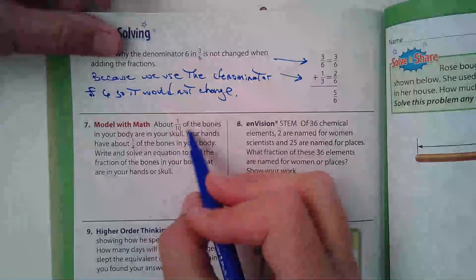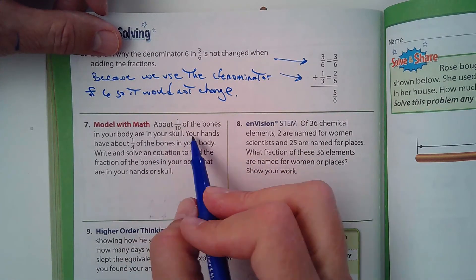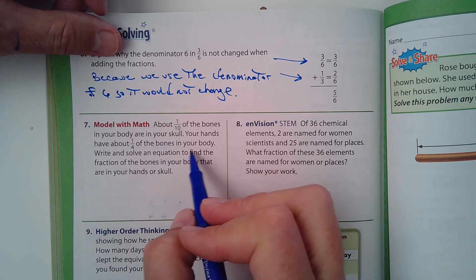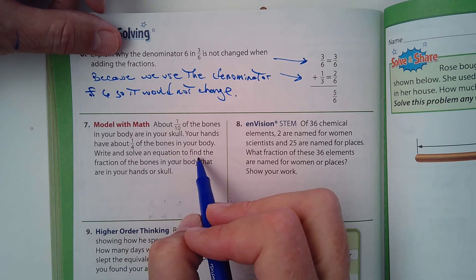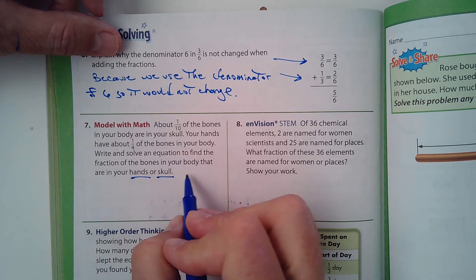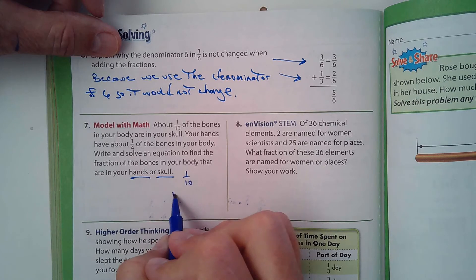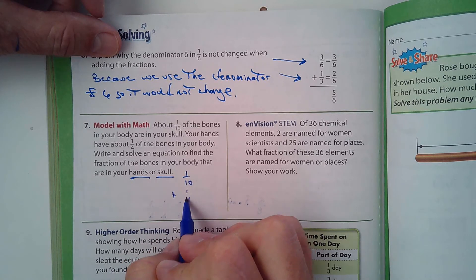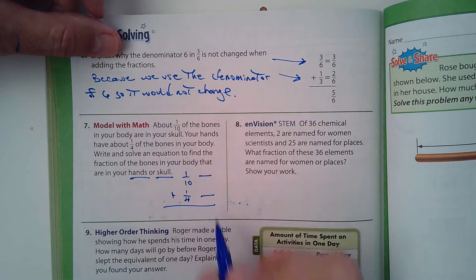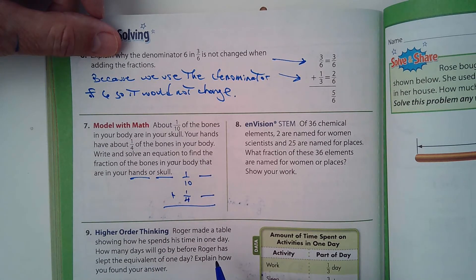About 1/10 of the bones in your body are in your skull. Your hands have about 1/4 of the bones in your body. Write and solve an equation to find out the fraction of bones in your body that are in your hands and skull. So what are we doing? We're adding 1/10 plus 1/4. What's the common denominator that we could use? Think about it. I'll let you guys figure that one out.